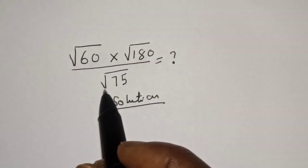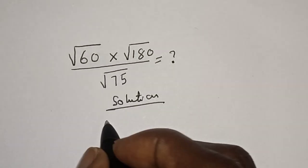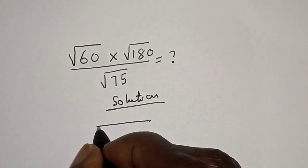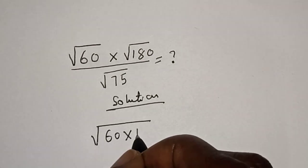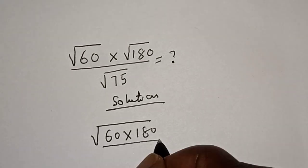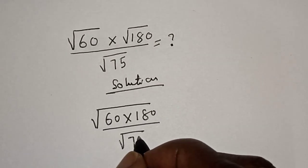Solution: We have square root of 60 multiplied by square root of 180 over square root of 75. The numerator can be expressed as square root of 60 multiplied by 180 over square root of 75.